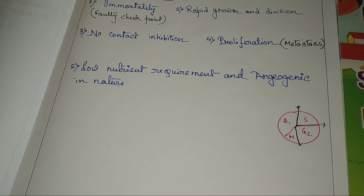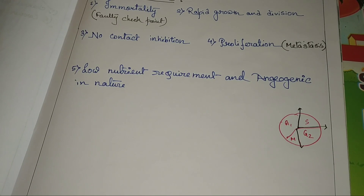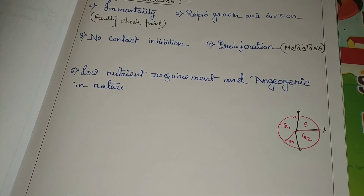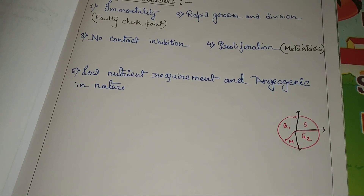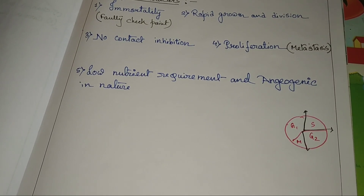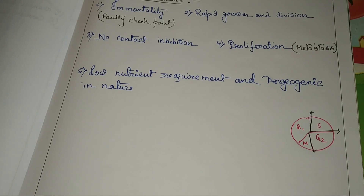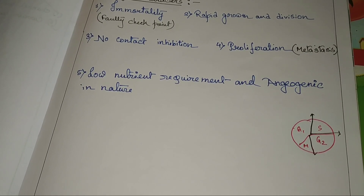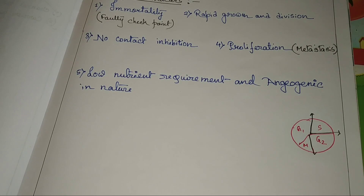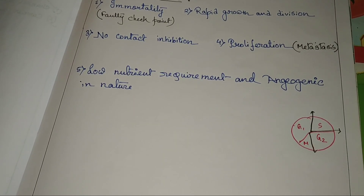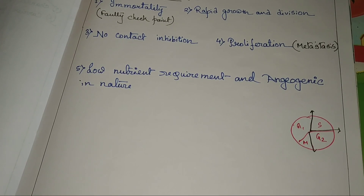What is the function of the checkpoint? If one phase doesn't work properly, then the checkpoint tells them to first complete that work, then you can move to the next phase. Before that, you are not going to the next phase. They actually check if the phase is doing the right thing or not. If they are not doing the right thing, they prevent the cell from going to the next phase.